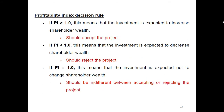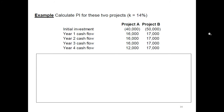This is the decision rule: if the Profitability Index is more than one, you should accept the project. If it is less than one, you should reject the project. And if the Profitability Index is equal to one, it means you are indifferent whether you accept or reject. We will see how to calculate this in the following video.